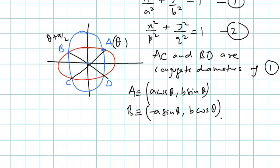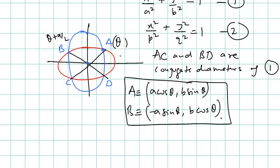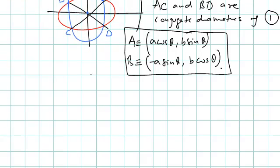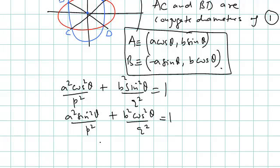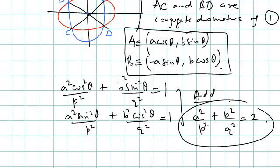These coordinates of A and B, being extremities of conjugate diameters, must also satisfy the second ellipse since they are points of intersection. Substituting A gives a²cos²θ/p² + b²sin²θ/q² = 1, and substituting B gives a²sin²θ/p² + b²cos²θ/q² = 1. Adding these two equations gives a²/p² + b²/q² = 2, which is what we have to prove.